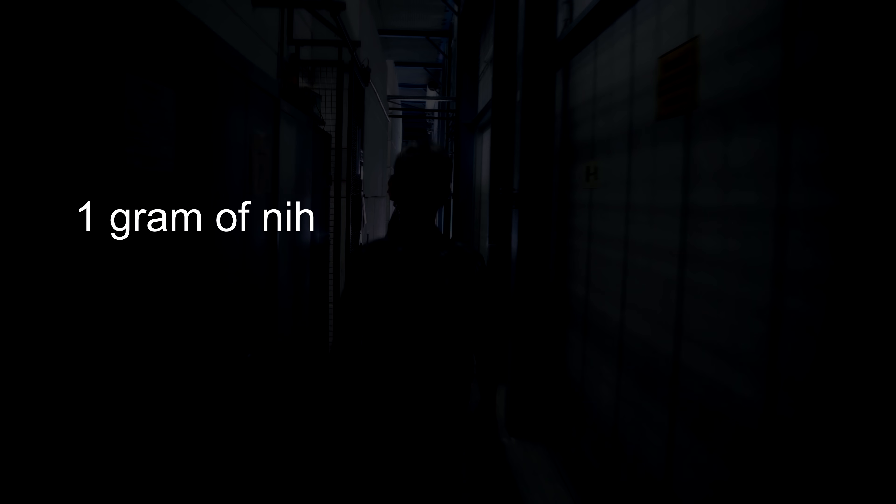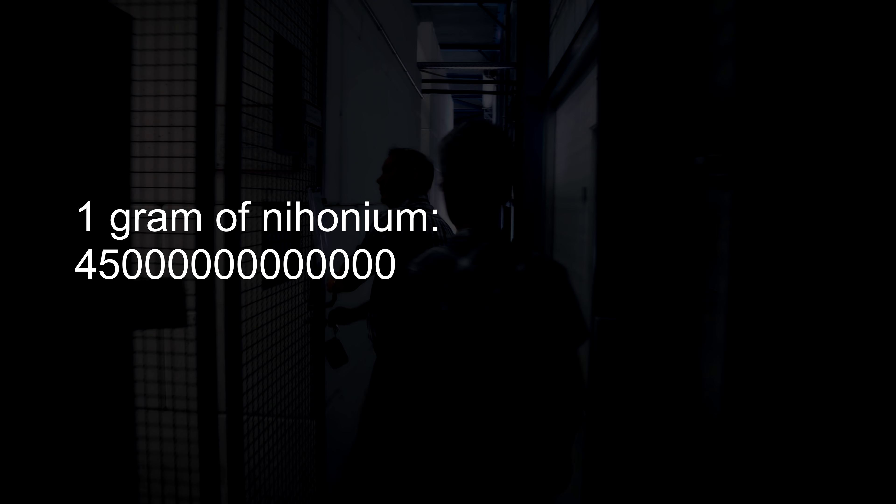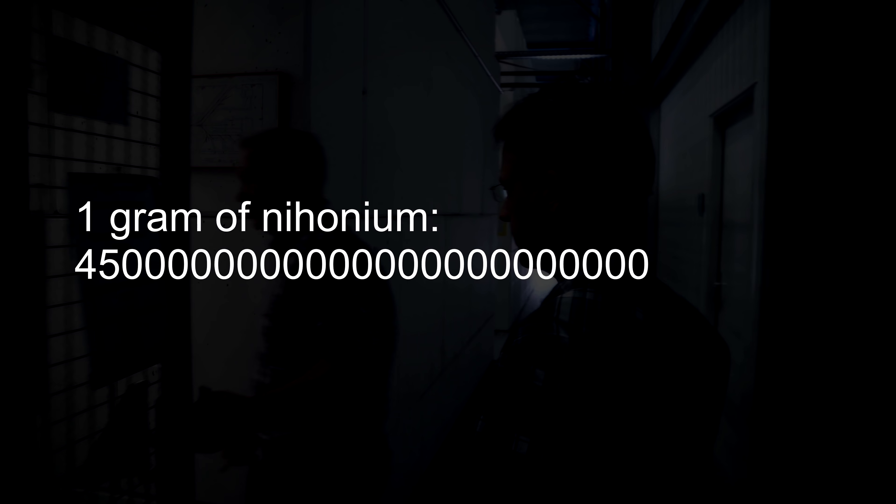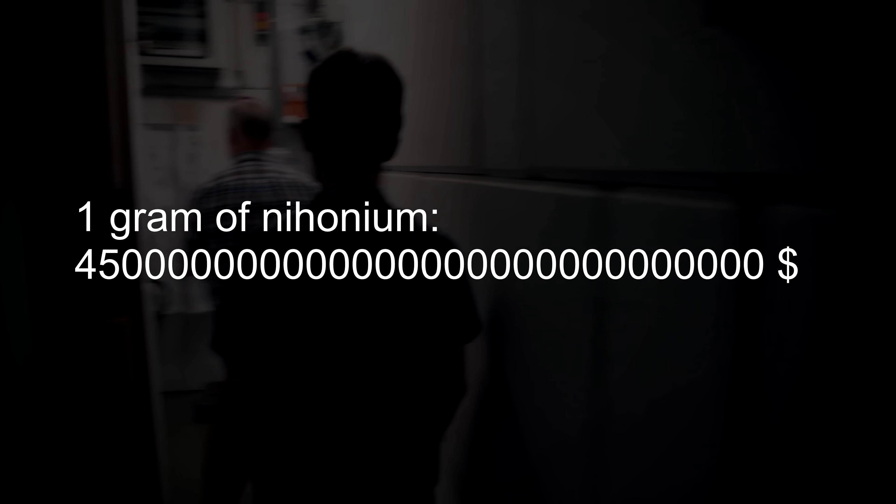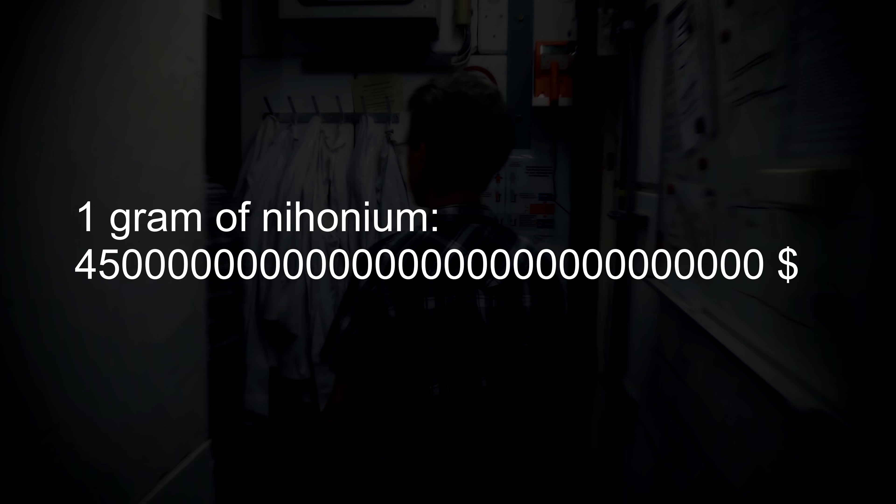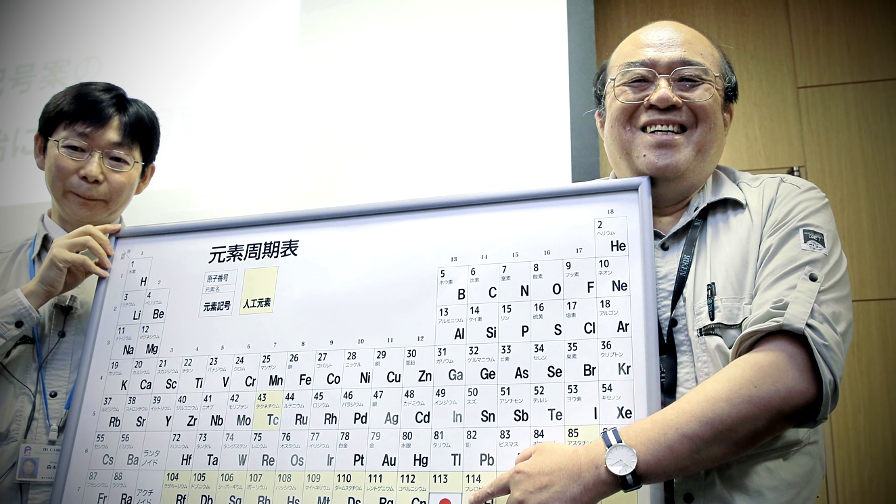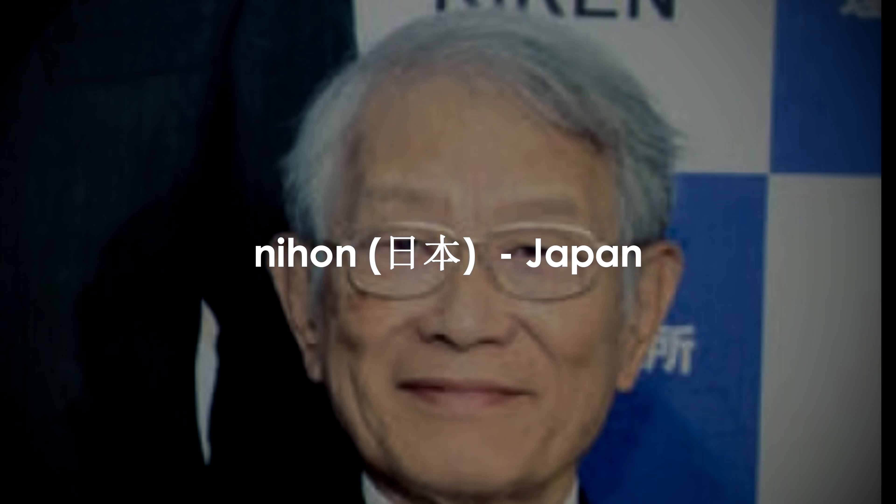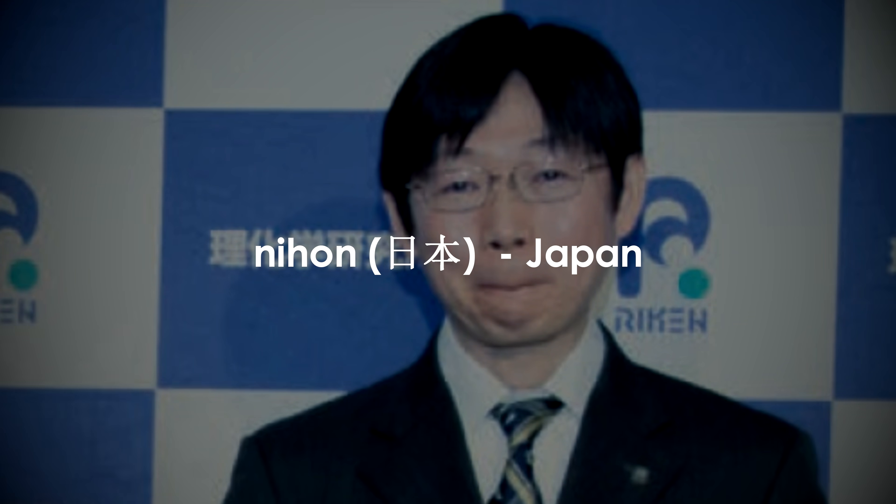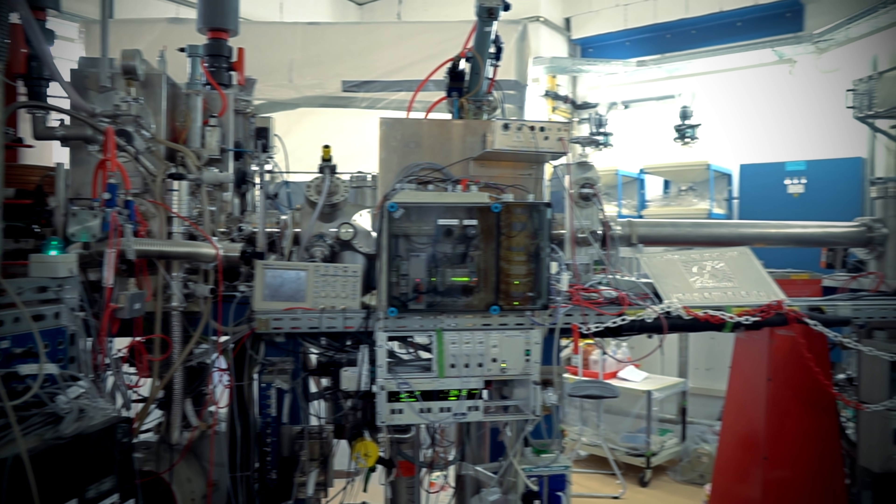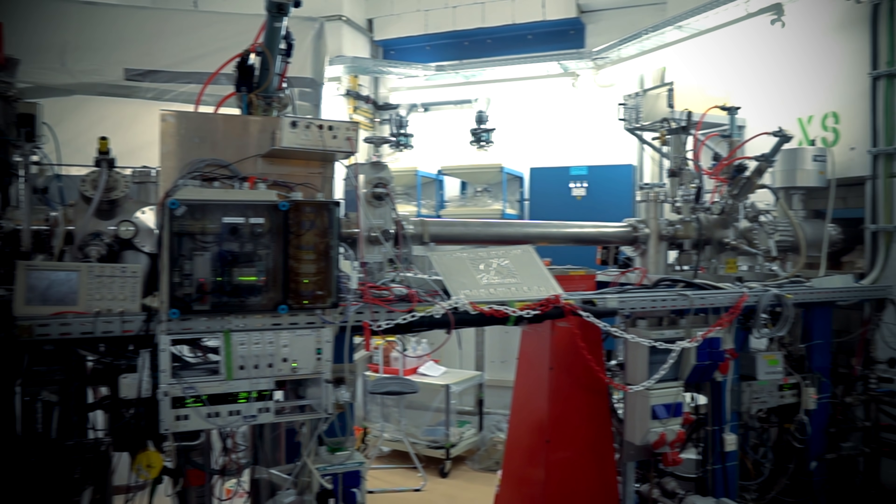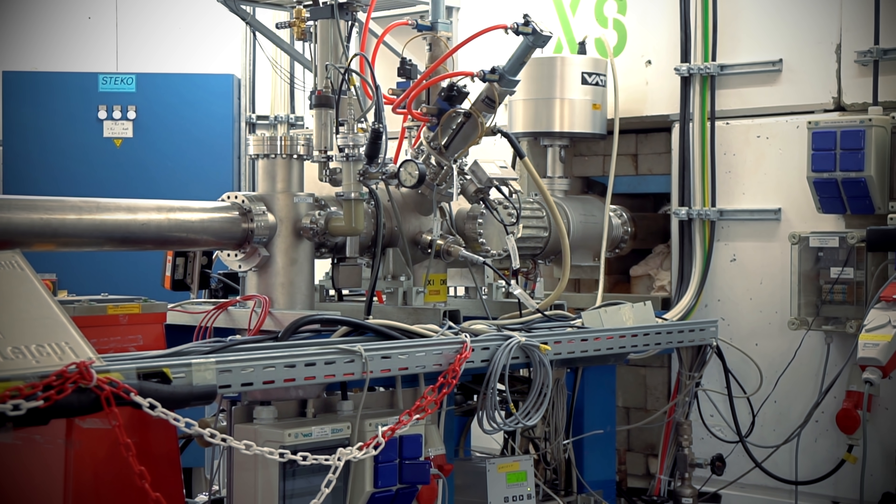Thus, if to calculate, one gram of nihonium costs about 45 octillion dollars. Even if the entire Earth and Moon were sold, the money obtained from the sale would not be enough to buy it. In the end of 2015, IUPAC recognized discovery of the new element by the Japanese scientists. In 2016, element 113 was named nihonium after the word Nihon, which is one of the common Japanese names for Japan.